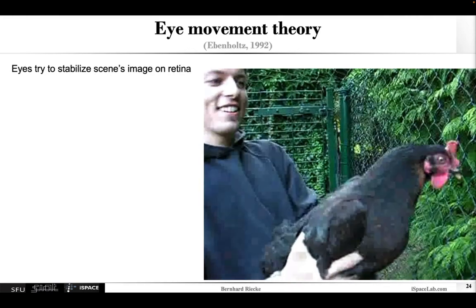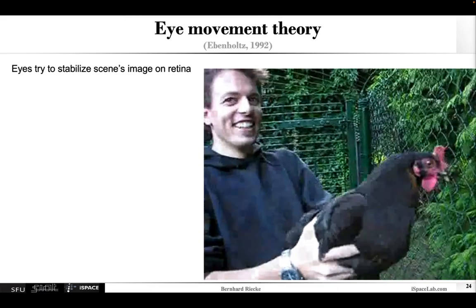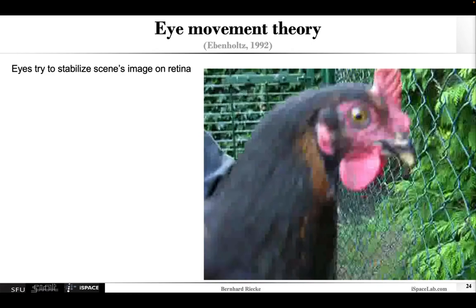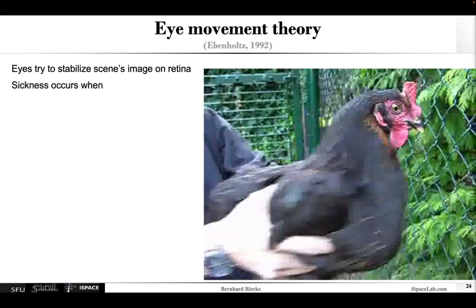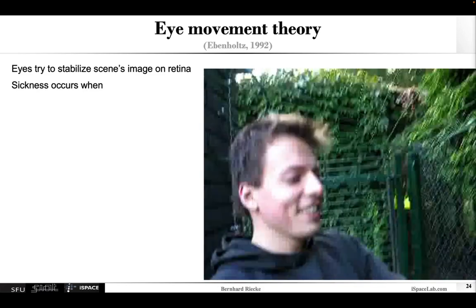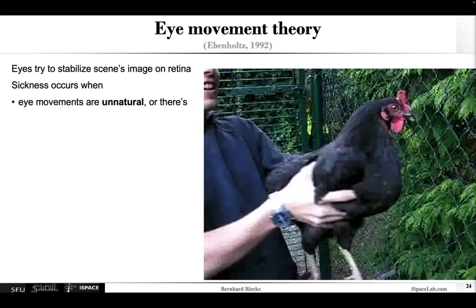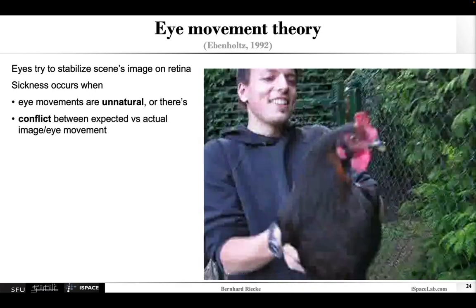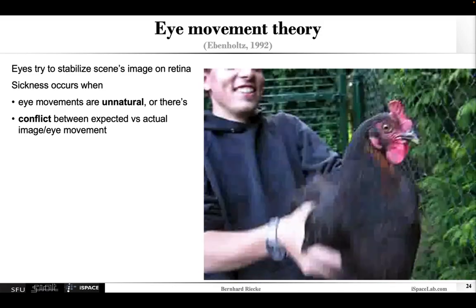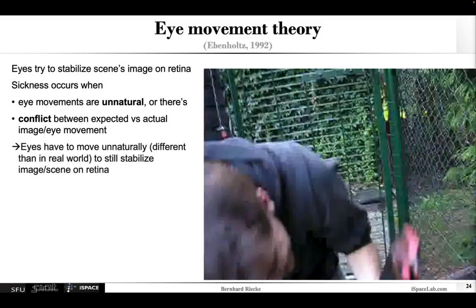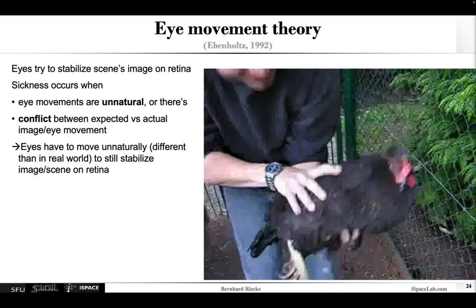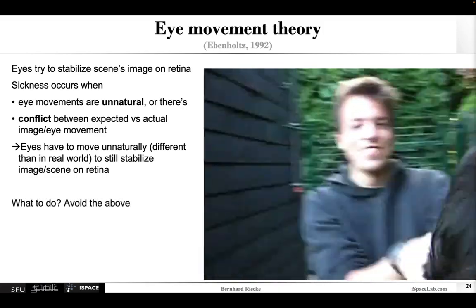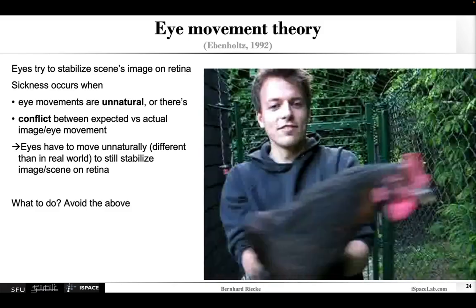Eye movement theory is another theory, here nicely illustrated with the common chicken, where the eye in general really tries to stabilize the scene on the retina. Cyber sickness or VR sickness can occur when these eye movements needed to stabilize the image on the retina are unnaturally unnatural, or there's a conflict between the expected versus actual eye movements or image movements. Basically, whenever the eyes have to move unnaturally — for example, differently than the real world — to still stabilize the image on the retina, that's a problem. So basically, avoid the need for these unnatural eye movements or conflicts.